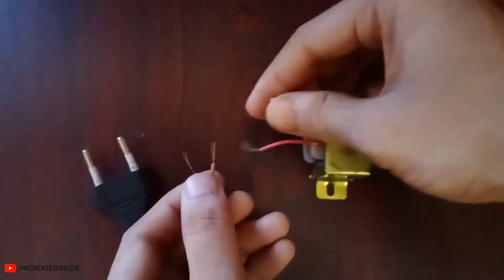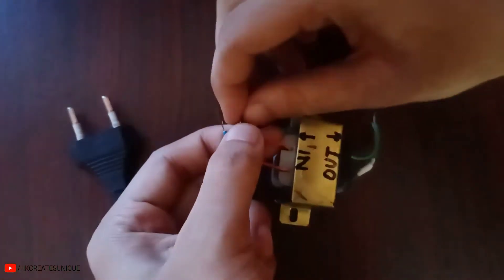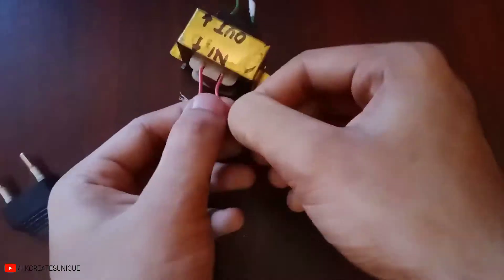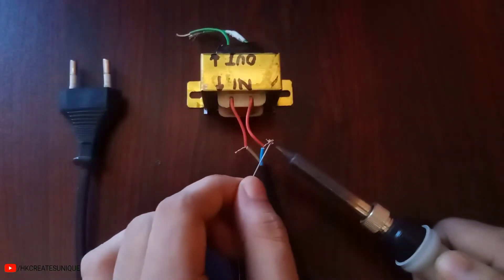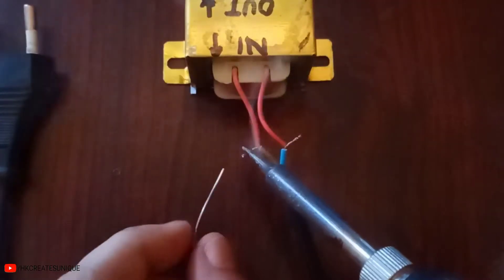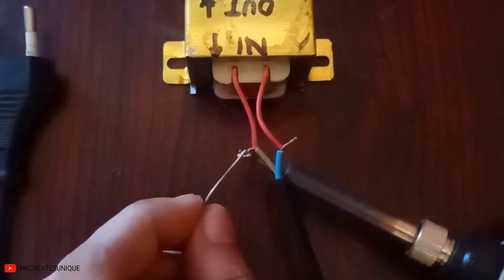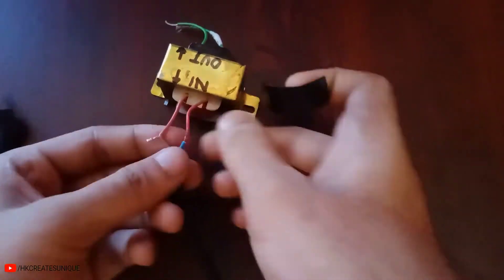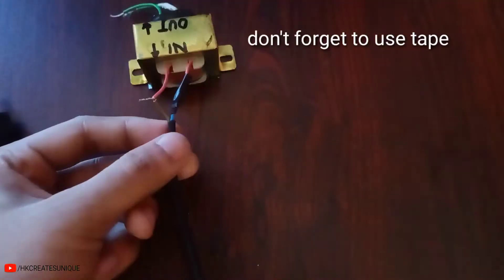Let's solder the 230 volts input wires. Use electrical tape to insulate the wires.